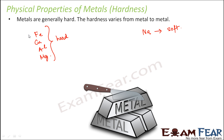You can take one of these metals and try to break it with a knife. You will find that you are not able to do it because the metal is quite hard. But if you try the same experiment with a piece of sodium, you will be able to cut it, which shows that sodium is comparatively softer than iron, copper, aluminium, magnesium, gold, or silver.